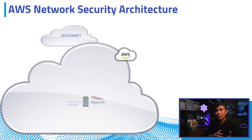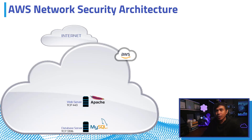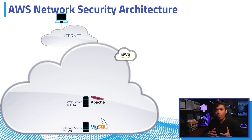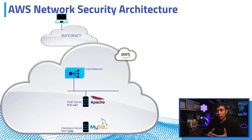First, we have our EC2 instance running Apache web server listening on TCP 443. We have a second EC2 instance running a MySQL database server listening on TCP 3306. Our client doesn't directly connect to the EC2 Apache web server. Instead, it has an ELB running in front of the EC2 Apache web server, with the web server behind the elastic load balancer and the database server also having a dedicated network.